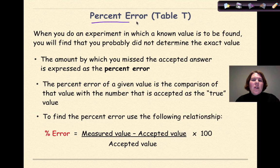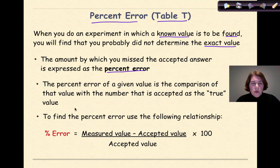Now let's talk about percent error, and this formula is listed for you on table T. When you do an experiment in which a known value is to be found, in other words, you're finding a value that's something that you're doing, you will find that you probably did not determine the exact value. The amount by which you missed the accepted answer is expressed as percent error. The percent error of a given value is the comparison of that value with the number that is accepted as the true value.